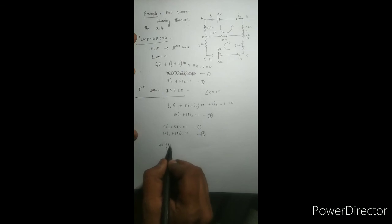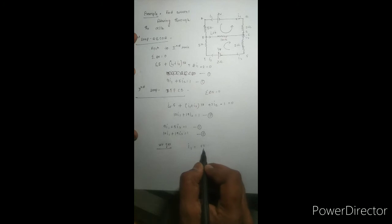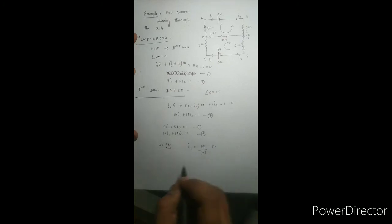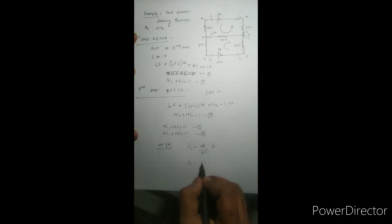Equation 1 is 9I1 plus 5I2 equals 1, and equation 2 is 10I1 plus 19I2 equals 1. Using substitution method to solve these two equations, we get I1 equals 14 upon 121 ampere and I2 equals minus 1 upon 121 ampere. This is the answer. I took this example to apply Kirchhoff's second rule, and in this way we can solve any complicated circuit.